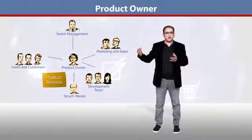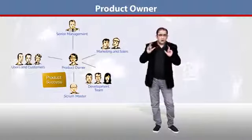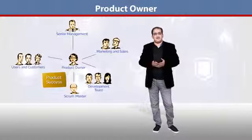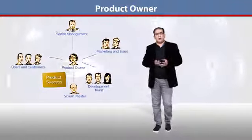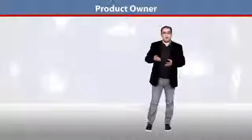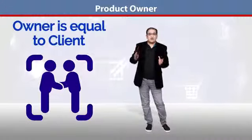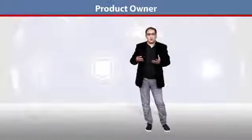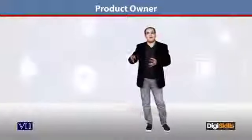The Scrum Master and Product Owner are two distinct roles. The Product Owner is like the client — for example, in an ideal scenario the client is involved, but not necessarily on a daily basis. The Product Owner is equivalent to the client, or that person or role who is actually driving what is required by the development team.